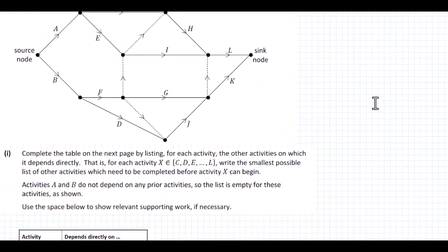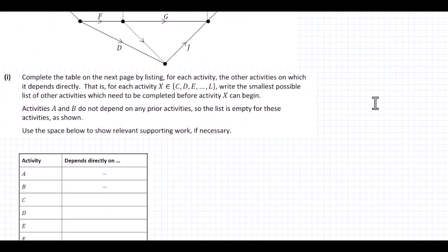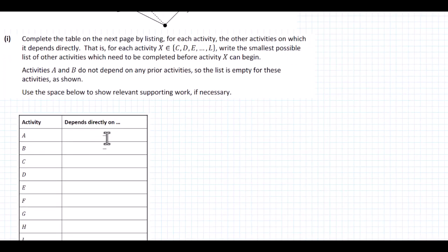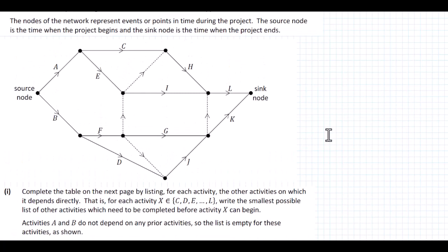So this is our diagram here. What we have to do is complete the table by listing for each activity the other activities on which it depends directly. That is, for each activity X, an element of C to L, write the smallest possible list of activities which need to be completed before activity X can begin. Activities A and B do not depend on any prior activities, so the list is empty for these. Looking at C, C simply depends on A and nothing else.